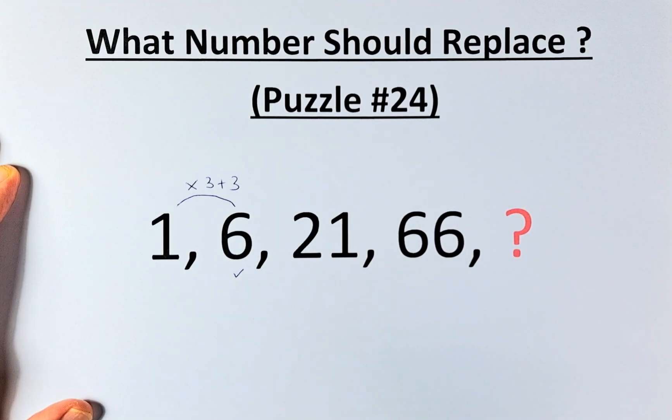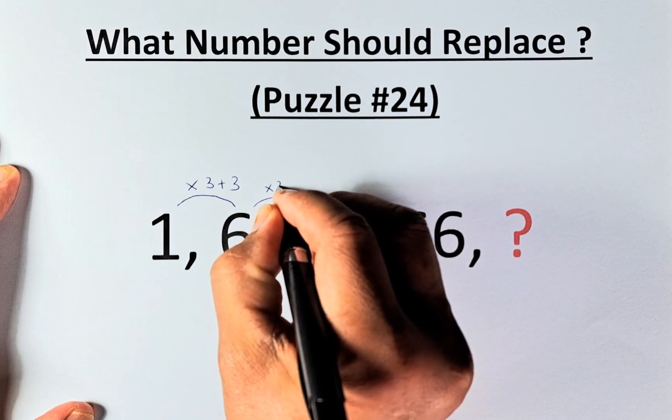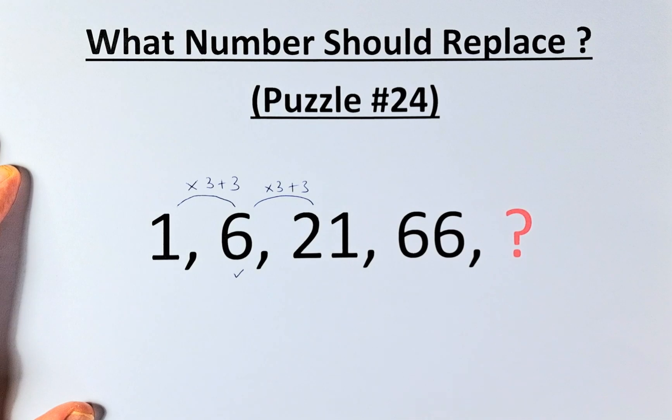Similarly, from 6 to 21, we do the same thing. We multiply by 3 and add 3. 6 times 3 is 18, 18 plus 3 is 21.